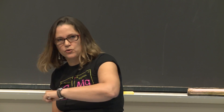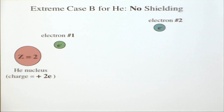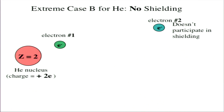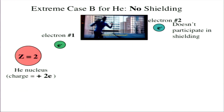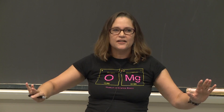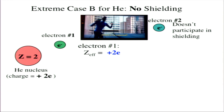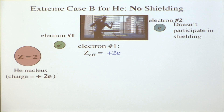Now let's go to the other extreme: zero shielding, no shielding at all. Here we have the helium nucleus. Electron 1 is close, and electron 2 is far away. In this extreme scenario, electron 2 is not participating in shielding at all — it's far away, out of the game, not shielding. So electron 1 feels the full force of the nucleus, and its effective charge is the full plus 2.